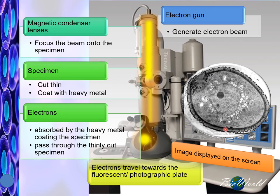And we will get a two-dimensional image of the cut specimen. This is actually what the pollen looks like inside. So the transmission electron microscope is able to give us the internal view of a structure. You can see there are two different shades of color: a darker color and a lighter color.